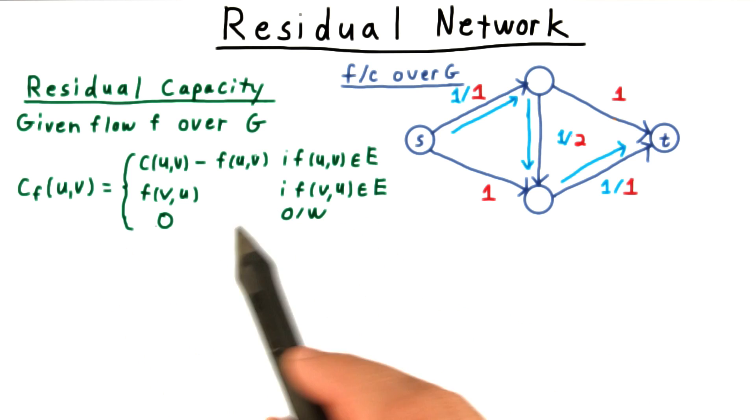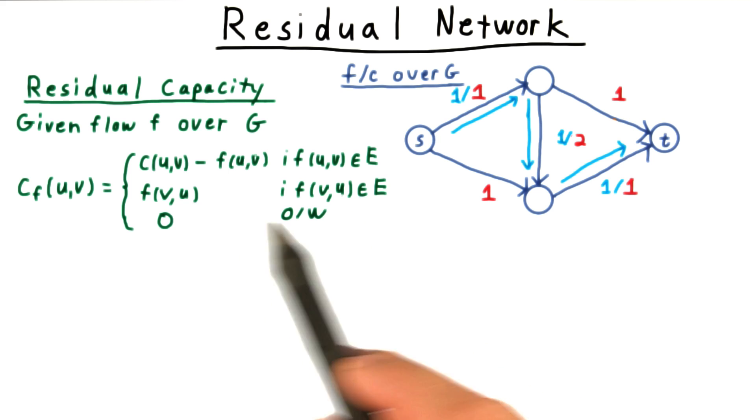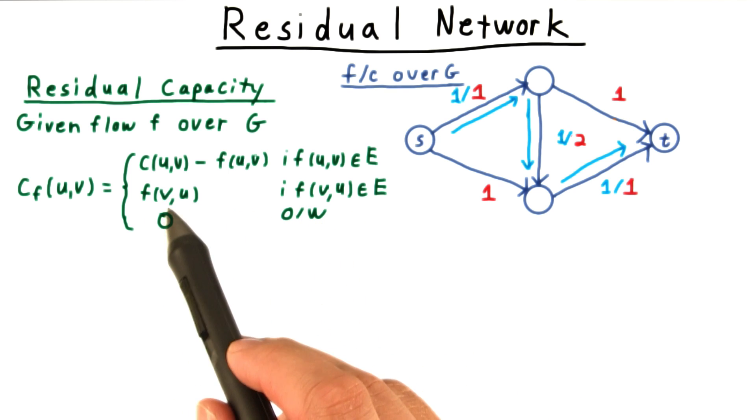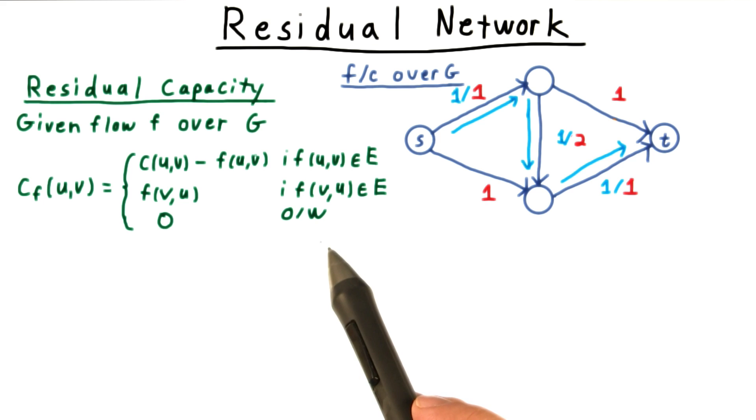For reverse edges, where not uv but vu is the edge in the graph, then we have a capacity equal to the flow that we sent from v to u. We can unsend this much flow. Everywhere else, the residual capacity is zero.